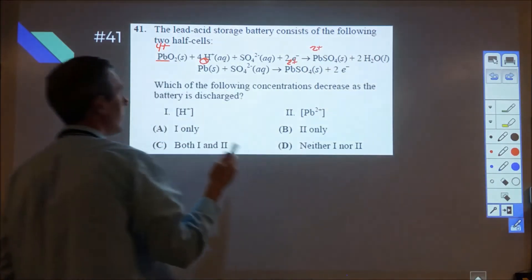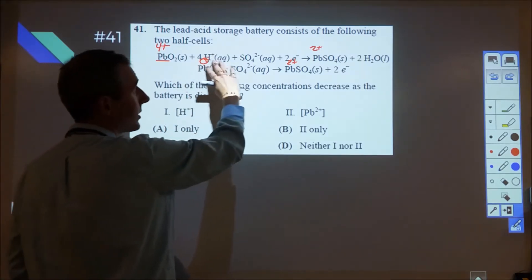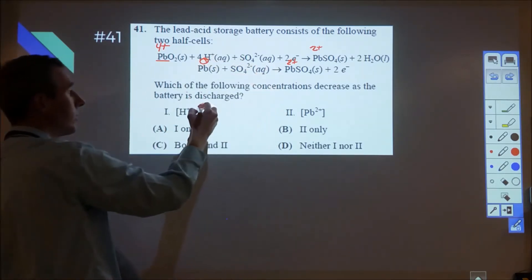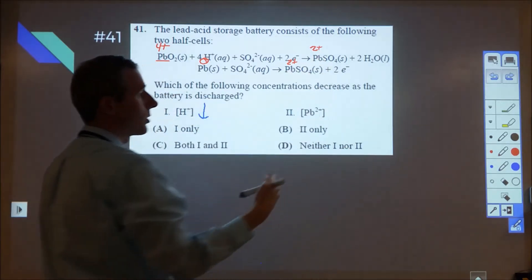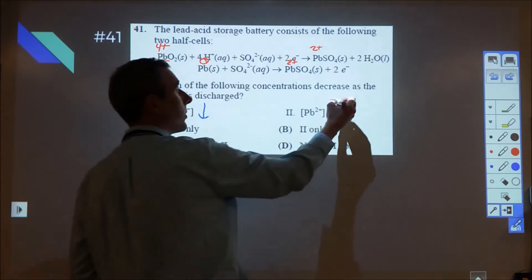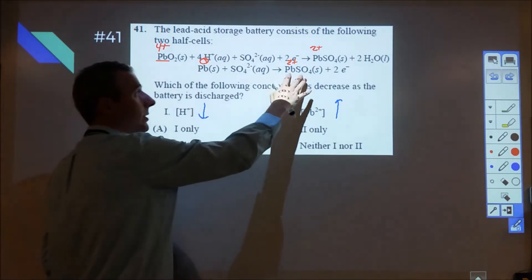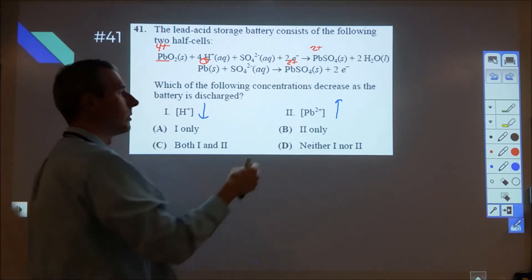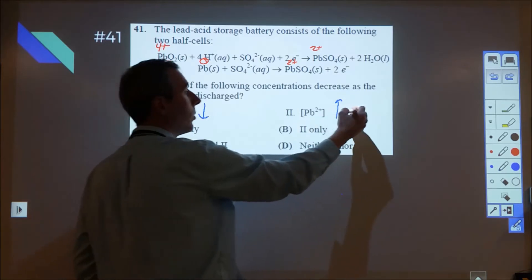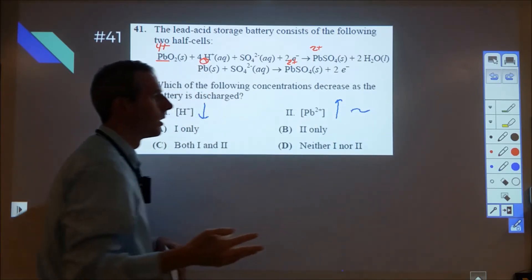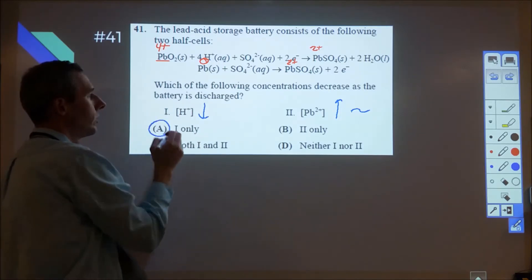So we get down to here and it says which concentration decreases. The H+ as this progresses is going to decrease because it's going to get used up. However, the lead 2+ is going to increase in concentration as we move forward, or it's going to stay the same depending on how critical you look at it. There will be some slight solubility of this at a KSP equilibrium level, so it'll stay mostly in the solid state, but we expect the concentration to either go up or stay the same. So therefore we know that in terms of decreasing, only one would occur.